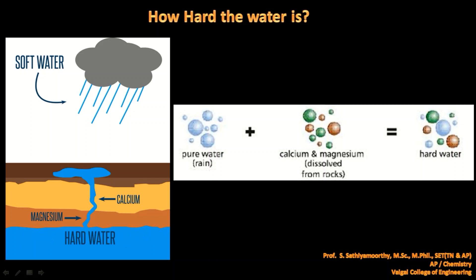When surface water enters the water table, during its travel it dissolves the calcium and magnesium salts present in rocky minerals and reaches the groundwater table. As a result, hard water becomes more and more concentrated in the groundwater table. So it is clear that hard water is nothing but water containing dissolved calcium and magnesium salts.